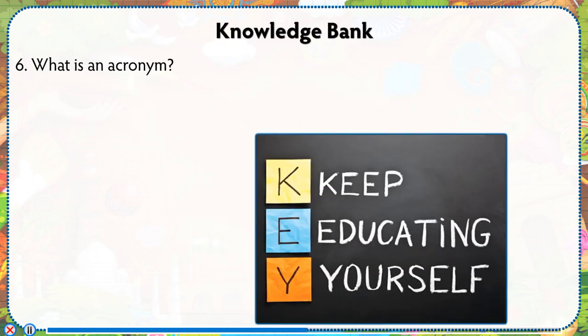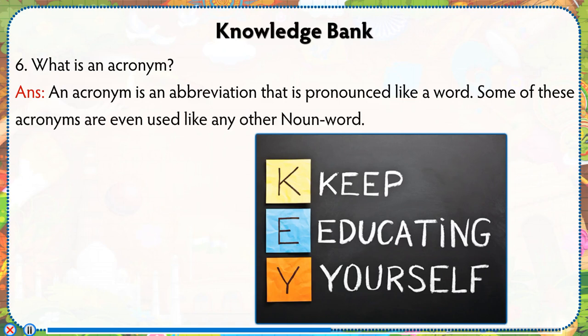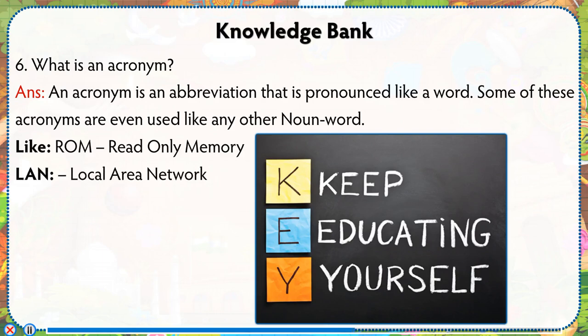What is an acronym? An acronym is an abbreviation that is pronounced like a word. Some of these acronyms are even used like any other noun word, like ROM (read only memory) and LAN (local area network).